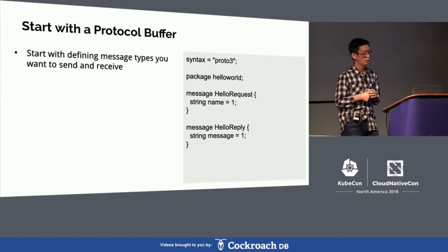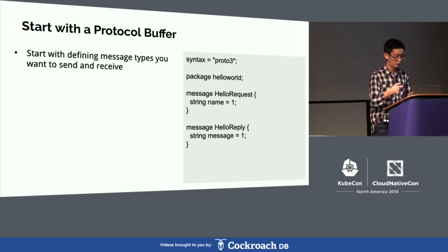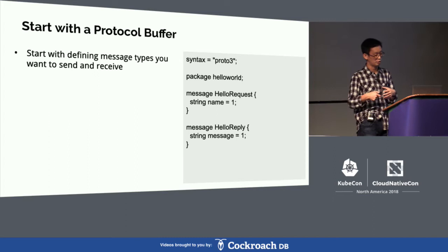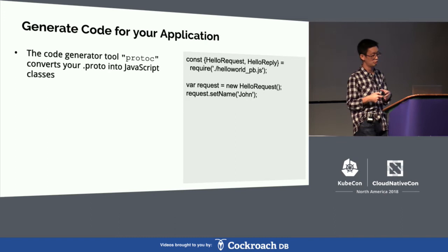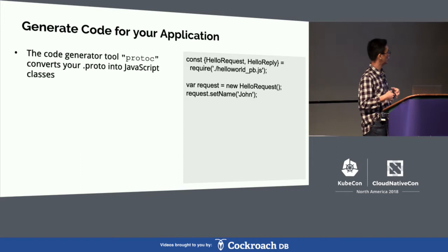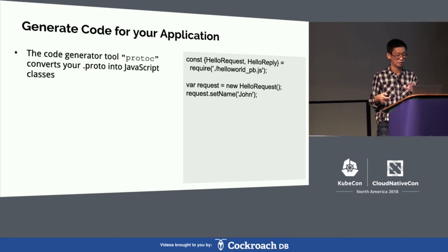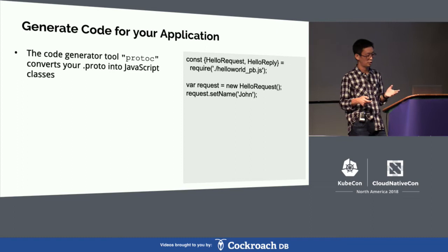You start with a protocol buffer definition, just like when implementing your GRPC services. You define message types — for example, a HelloRequest that takes a name string, and a HelloReply that also contains a string. You can use your protoc tool to convert this proto into JavaScript classes. Once you run the tool, you get hello_world_pb.js. You can import the HelloRequest and HelloReply classes into your client code, instantiate them, set the name, and you're good.